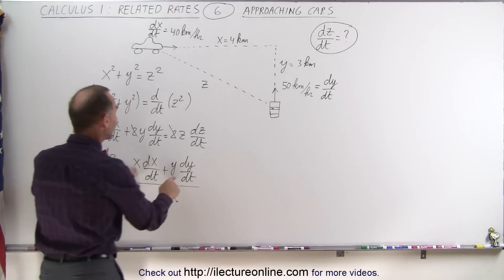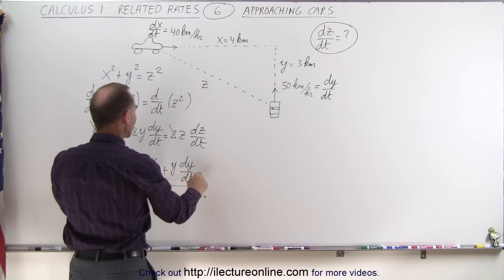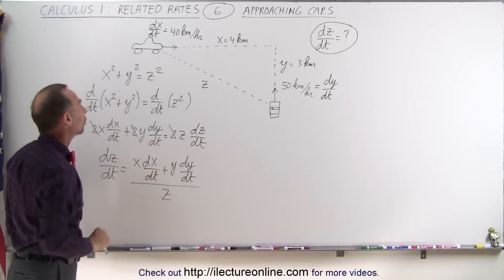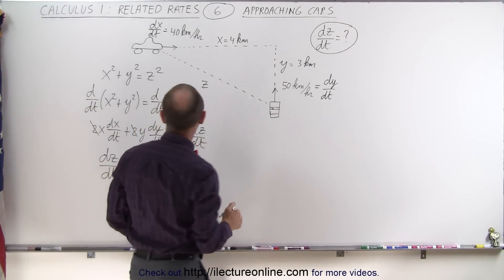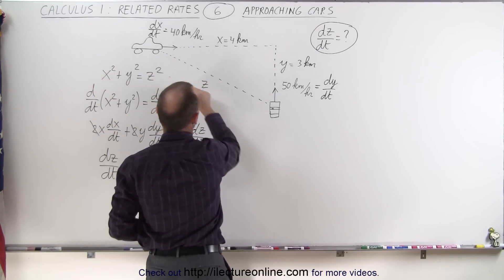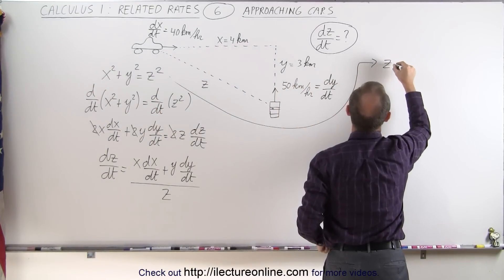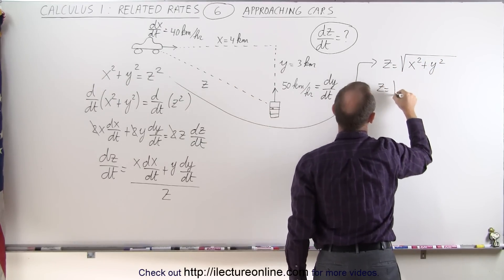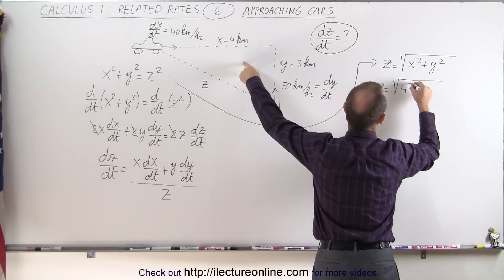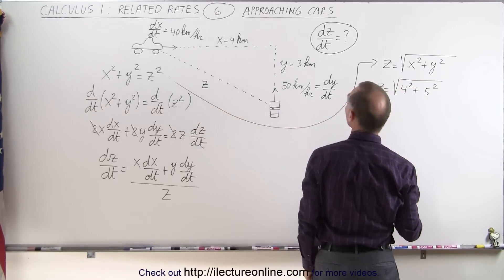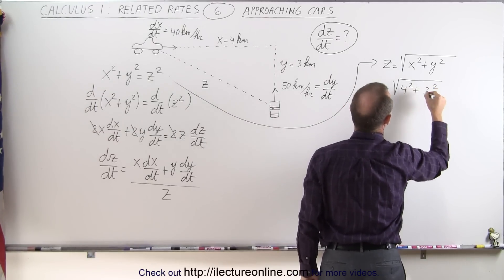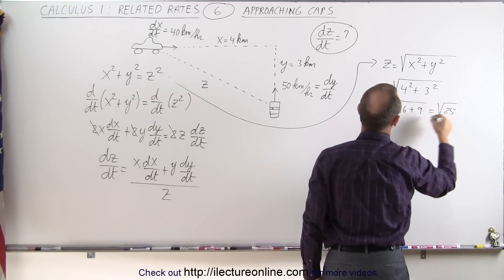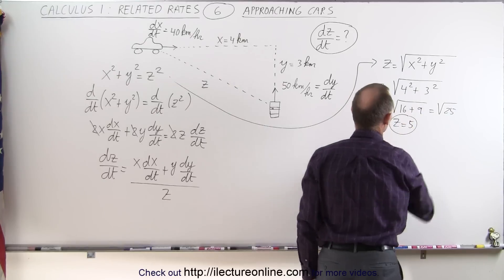We're given both x and y, and we're given dx/dt and dy/dt. We just don't know yet what z is equal to. So to find dz/dt, we have to know the value of z. We can write that z equals the square root of x squared plus y squared. So z equals the square root of 4 squared plus 3 squared — that's the square root of 16 plus 9, which is the square root of 25, so z equals 5.